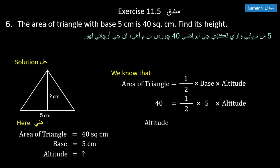Multiply both sides by 2: 80 equals 5 times altitude. Divide by 5: altitude equals 16 centimeters.